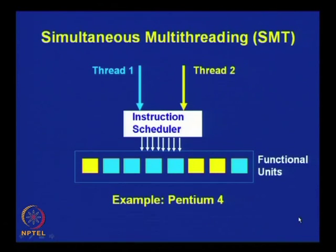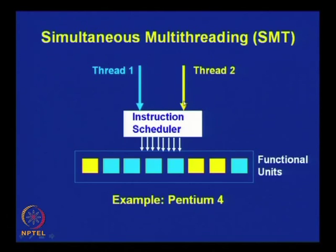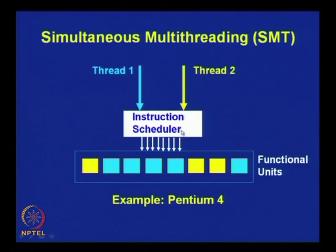This gives a visual representation of simultaneous multithreading with two different threads. There is an instruction scheduler that schedules instructions from different threads to different functional units — the yellow-colored slots correspond to one thread (thread 2) and green/blue-colored slots correspond to thread 1. The instruction scheduler schedules different threads to different functional units.